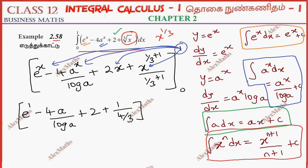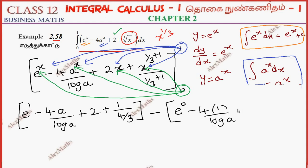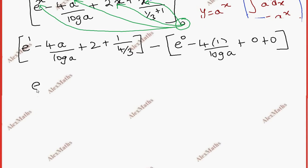We can do the low limit. e power 0 is 1, a power 0 is 1 by log a.